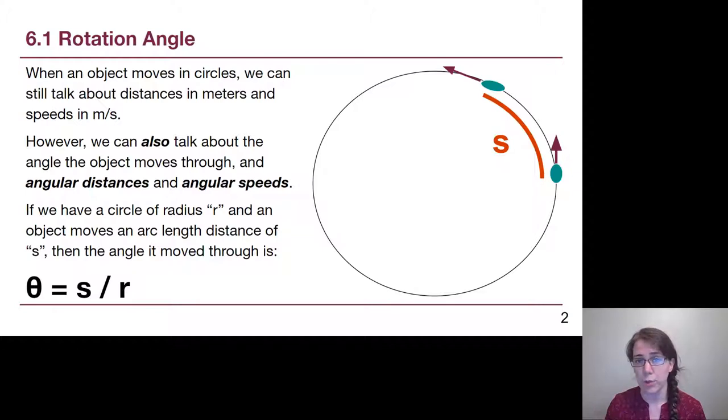And the angle that it moved through, if you were to draw a line from the center to point A and from center to point B, the angular distance that it moved through, we use the Greek letter theta. Theta is defined as the arc length divided by the radius.